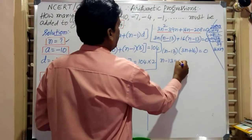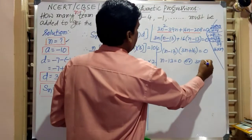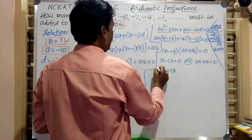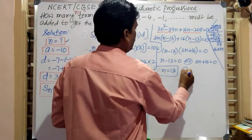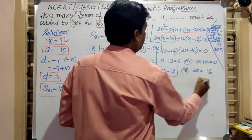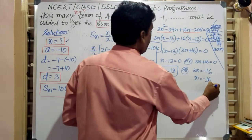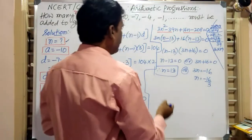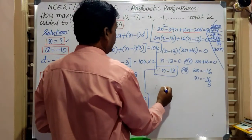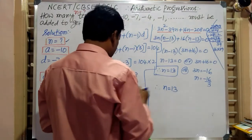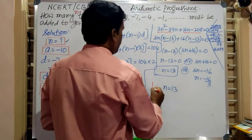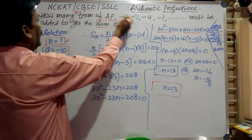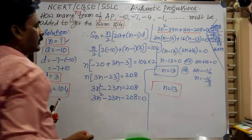Therefore, n minus 13 is equal to 0 or 3n plus 16 is equal to 0. That gives n is equal to 13, or n is equal to minus 16 by 3. Since the number of terms cannot be negative, we take n is equal to 13. Therefore, n is equal to 13 is the answer. So 13 terms of the AP must be added to get the sum 104.